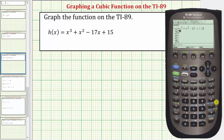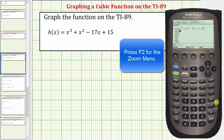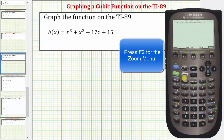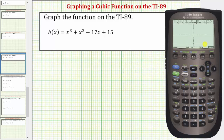Let's begin by graphing this using the standard window. To do this, we'll press zoom and then number six for zoom standard. If we already had the standard window, we could just press diamond F3 for graph.